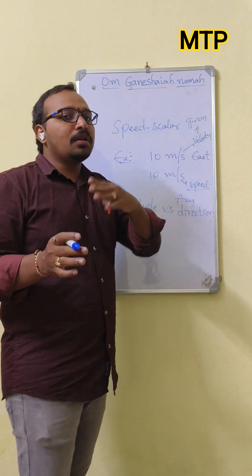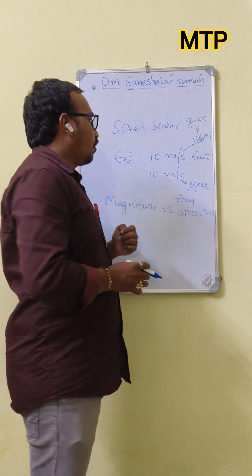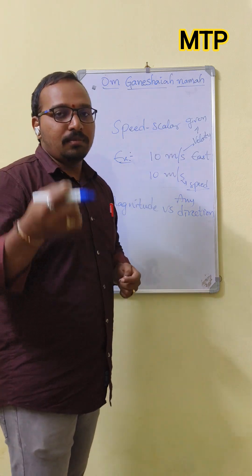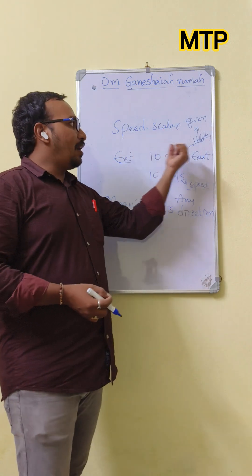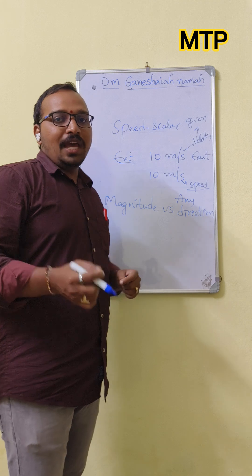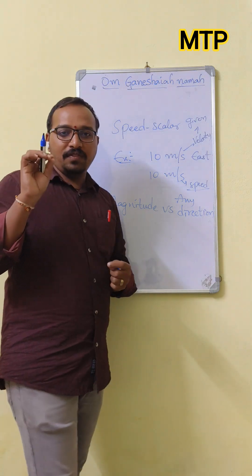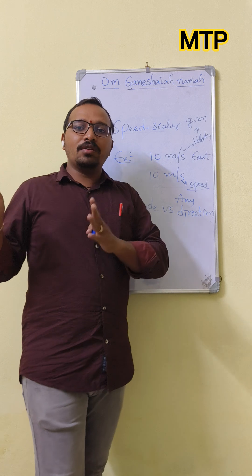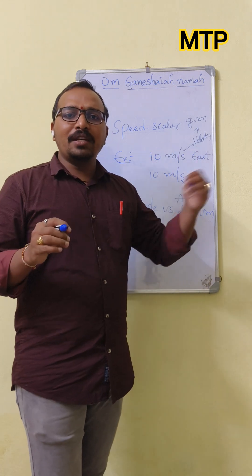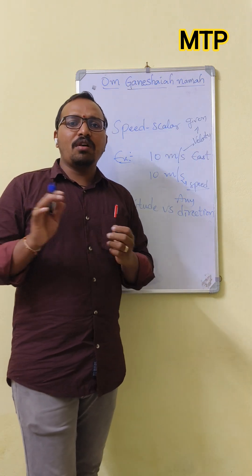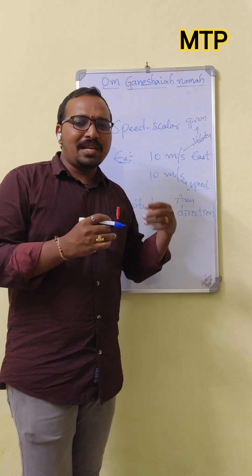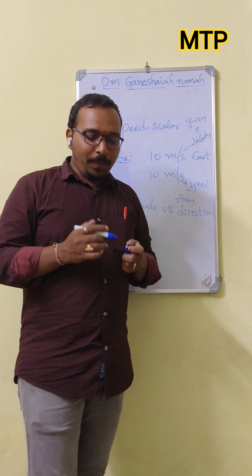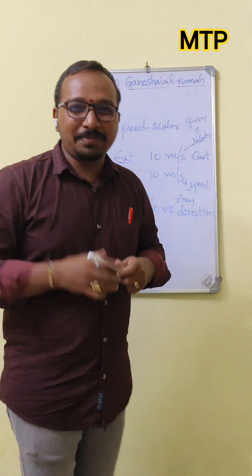In most basic-level cases, speed is a scalar and velocity is a vector quantity — that is the very important difference between speed and velocity. Also, if you consider the units, they are the same for both. Hope you liked the video. Thank you, please subscribe.